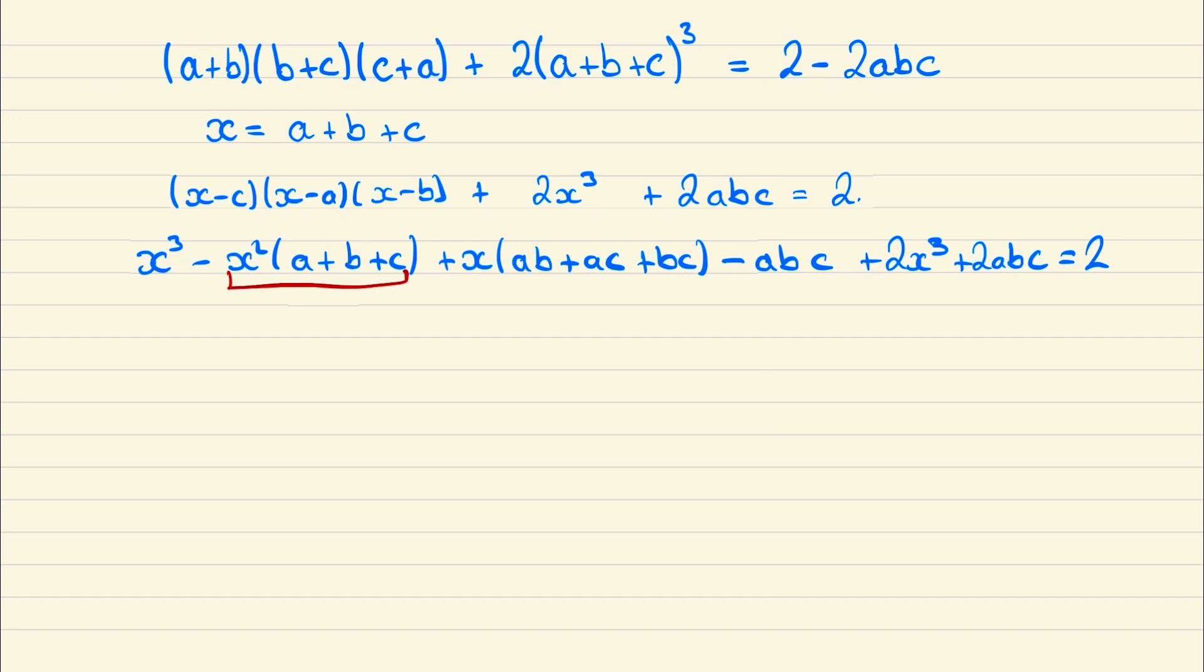And notice that this here is just x cubed. So these two starting terms will cancel out. And so we can write this now as 2x cubed plus x times ab plus ac plus bc, plus abc, is equal to 2.